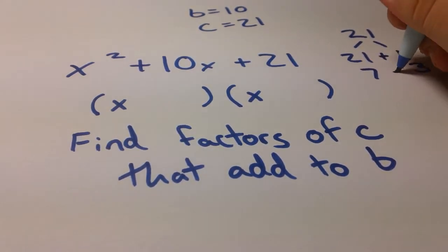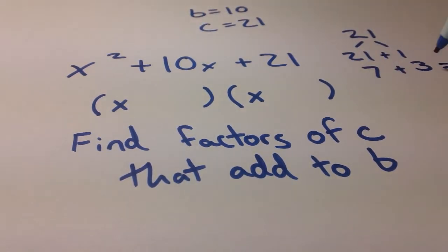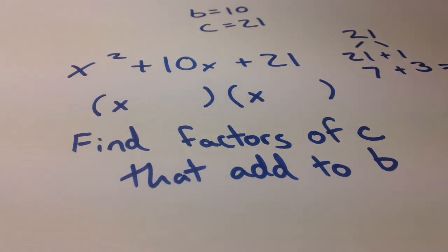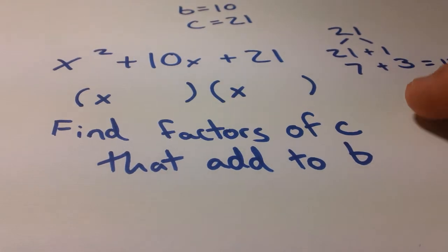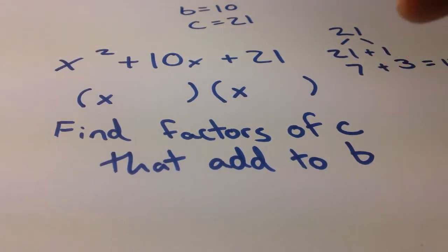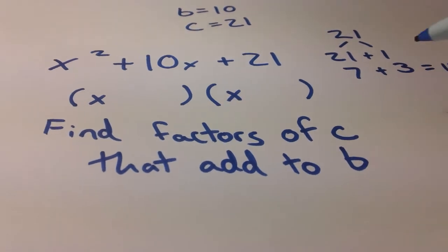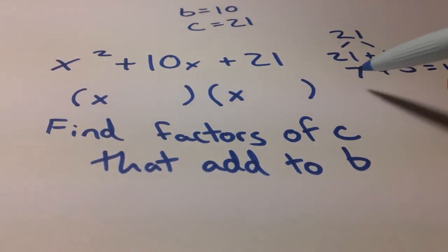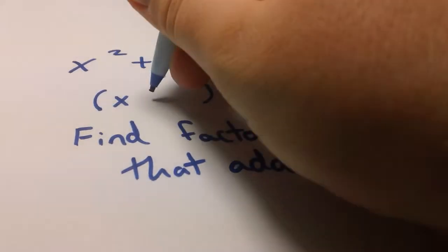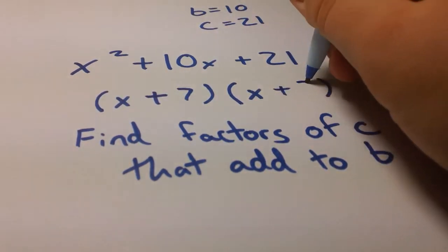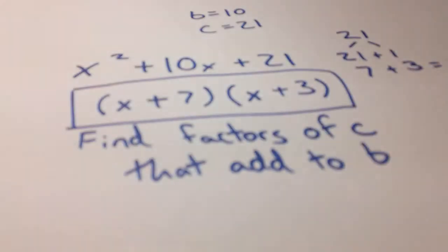So, we want to test out when we add either of these, do they equal our b value? And in this case, of course, it does. 7 plus 3 is going to be 10, right? That just works out. So, that means these two factors are the numbers that's going to go into our quantities. Since these, we take the sign of both of these. This is a positive 7 and a positive 3 that we multiply to get 21 and add to get 10. So, we add a positive 7 and a positive 3 into our quantities. And that makes this our final answer.